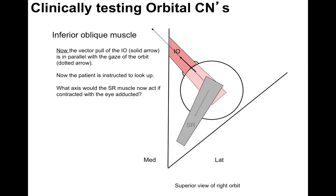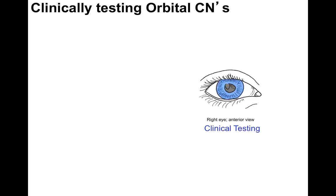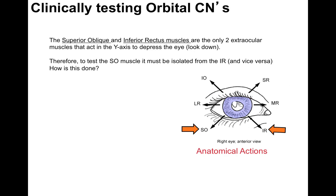What axis would the superior rectus now act on with the eye adducted? It acts on the z-axis to torque the eye, which is not easy to see. So in clinical testing, first you have the patient look laterally and then look up — that's how you isolate the superior rectus away from the inferior oblique. And to test the inferior oblique, you have the patient adduct their eye first and then look up, isolating the inferior oblique away from the superior rectus.